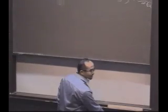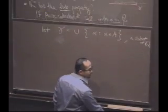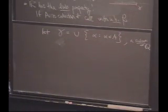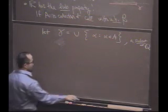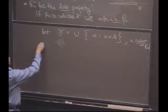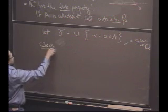Now, I have a subset of rationals. And I was thinking of this as a candidate for the supremum, but the first thing I better check is that gamma is what?